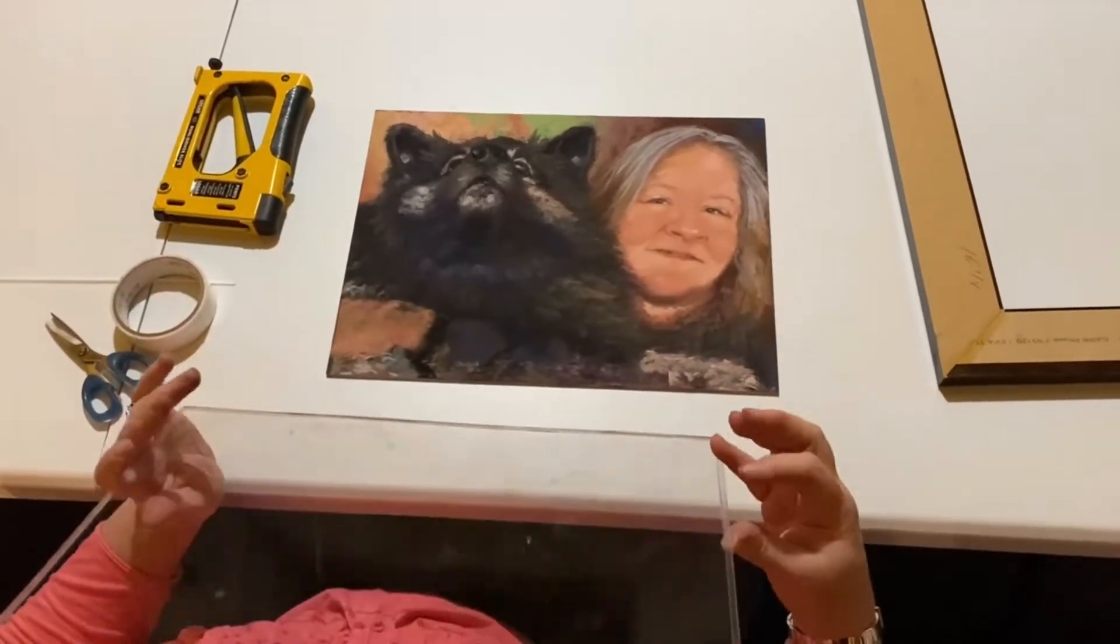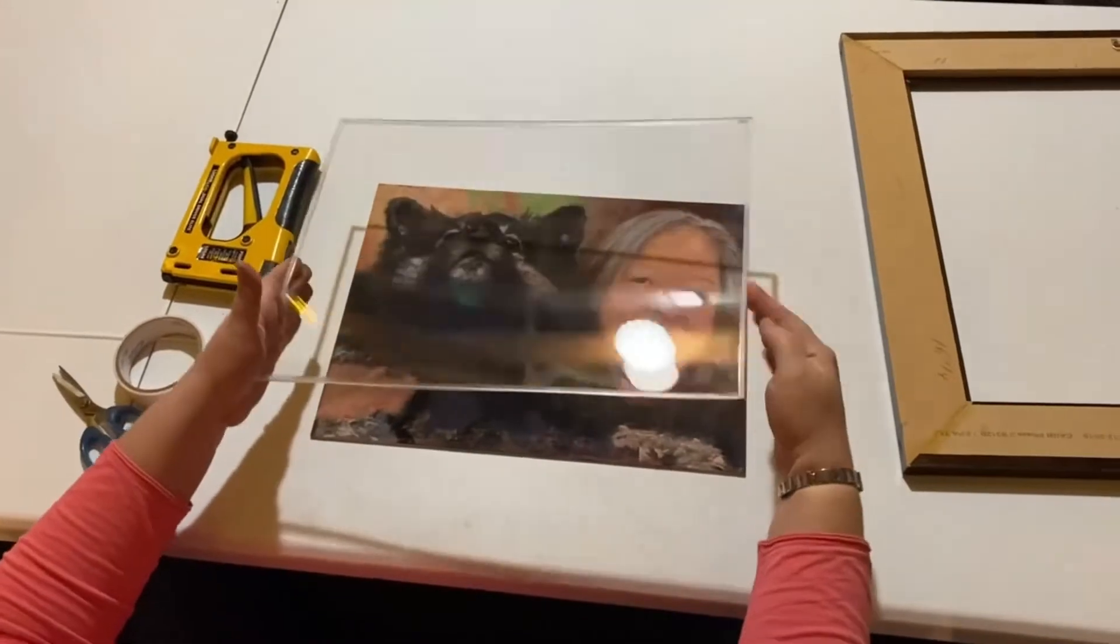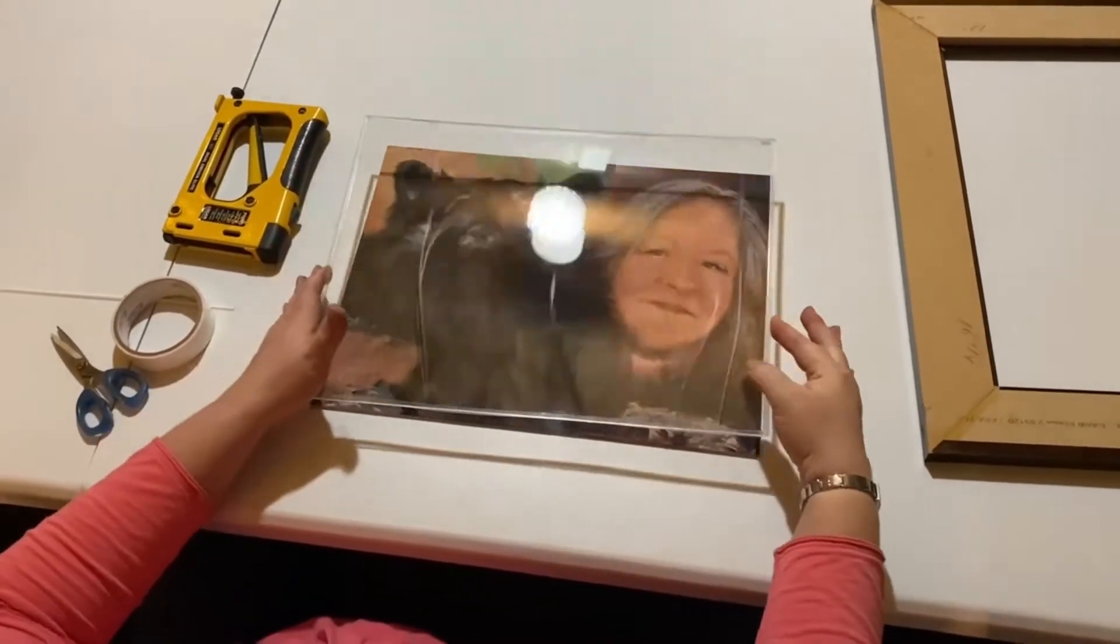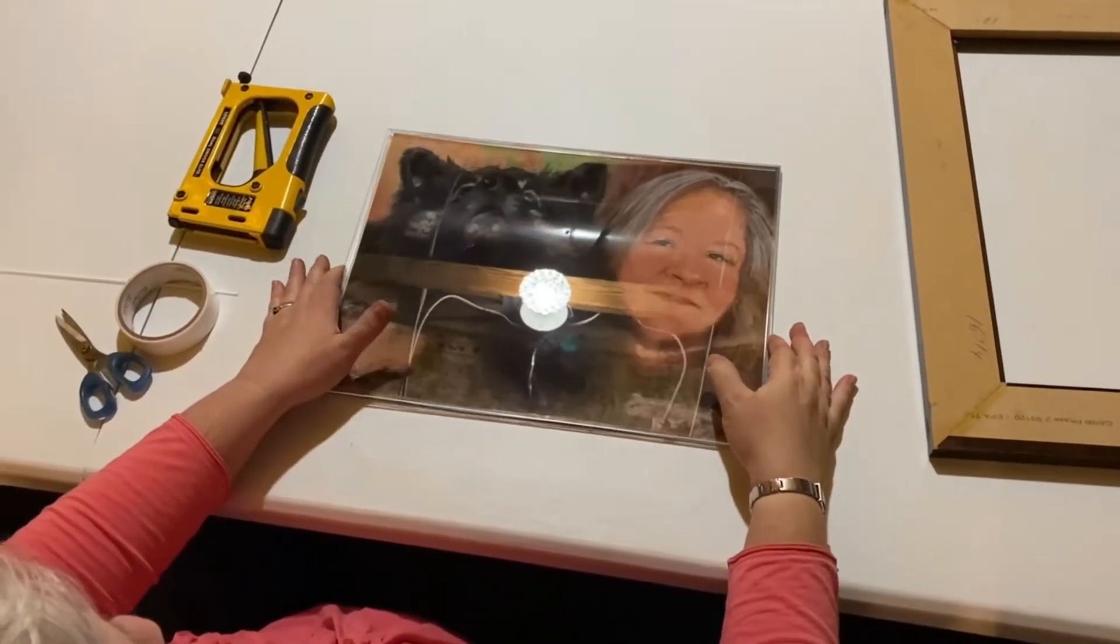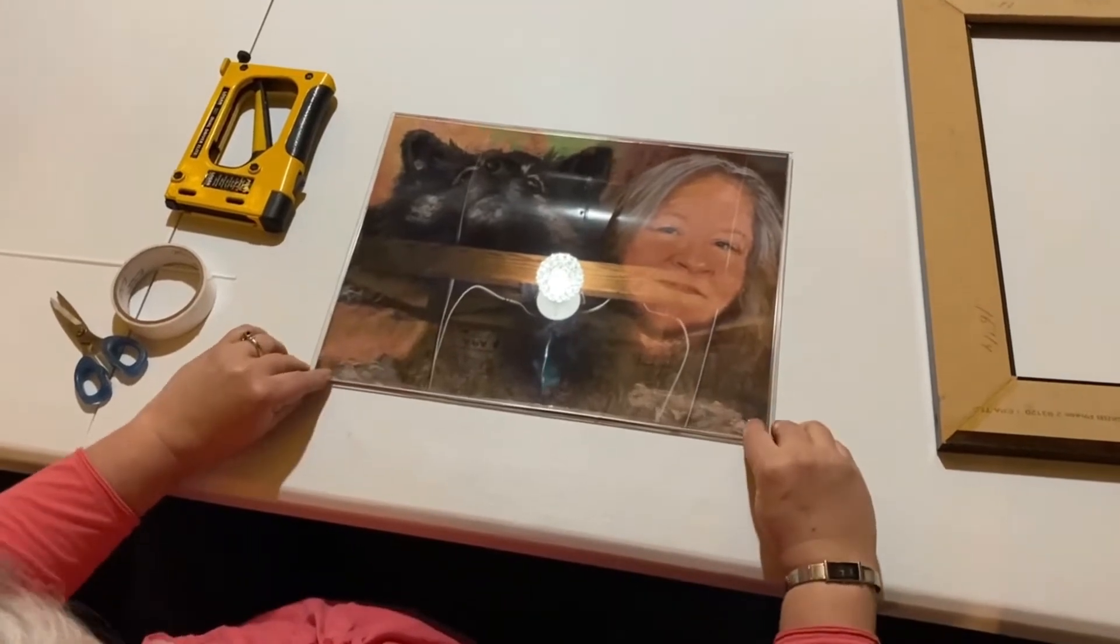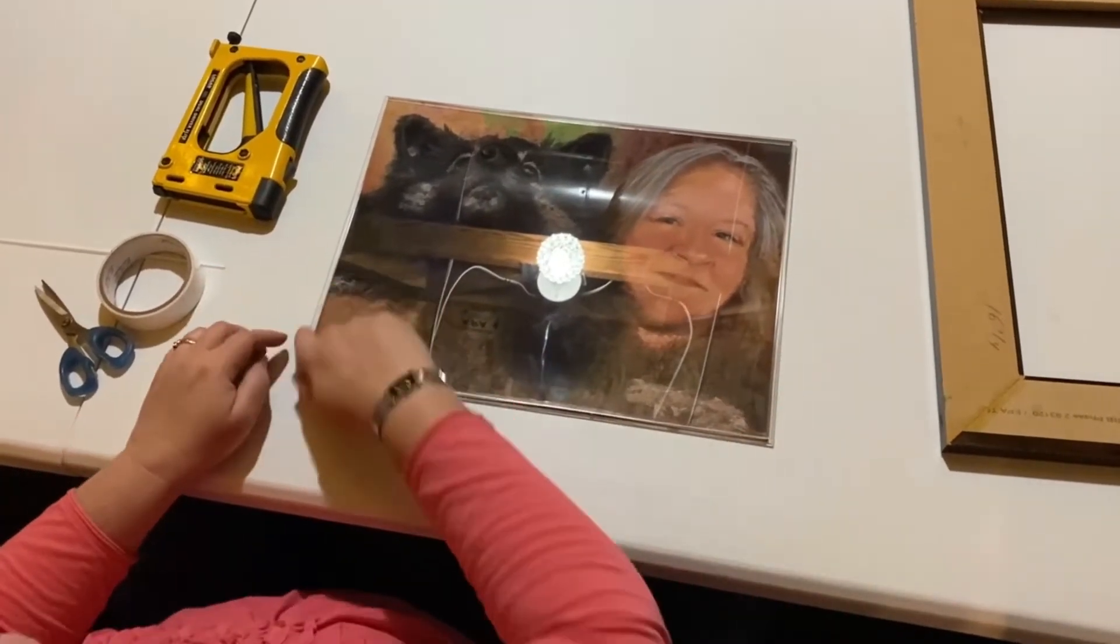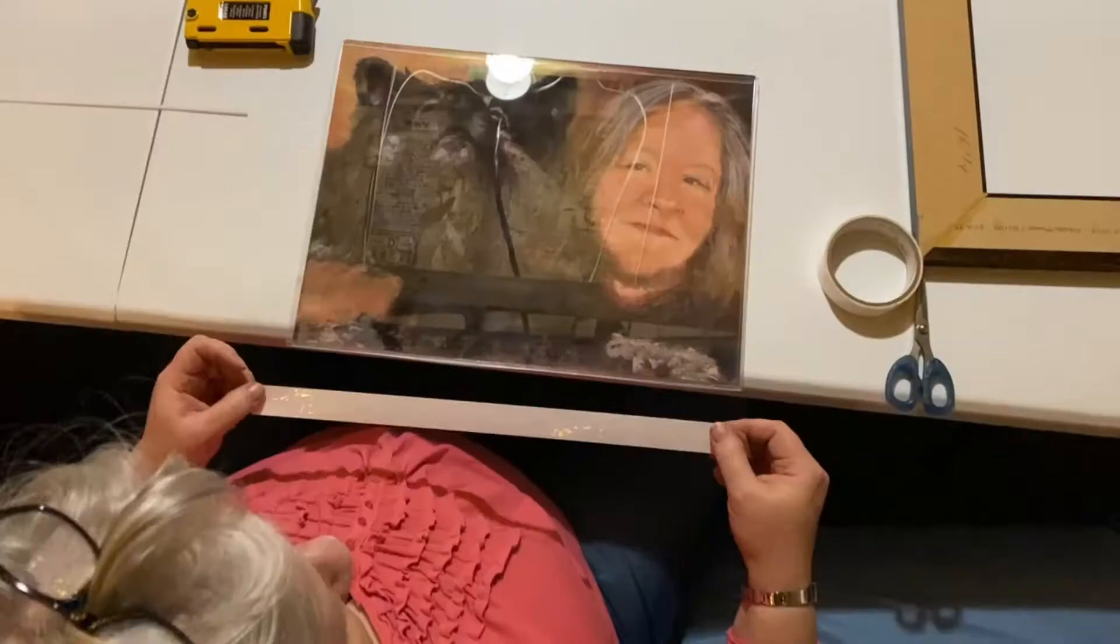Now I'm going to put the acrylic on top with the spacers facing down on top of the pastel so that the spacers will be touching the artwork and the top is going to be completely smooth.